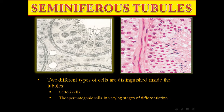Sertoli cells are pyramidal cells with prominent nuclei — they are supportive. Spermatogenic cells include spermatogonia, which are in direct contact with the basement membrane; primary spermatocytes, which have thin threads of chromatin and are the largest cells; spermatids; then spermatozoa.